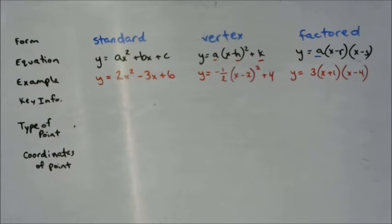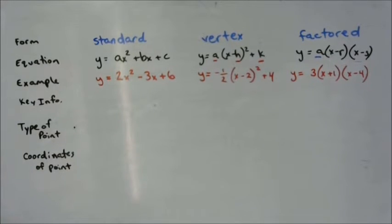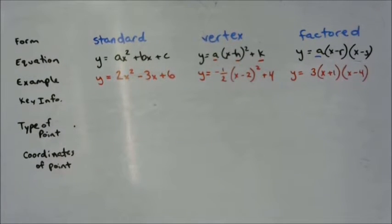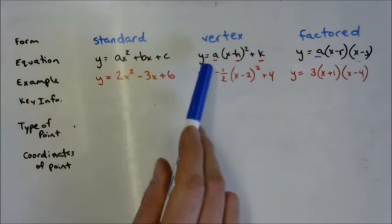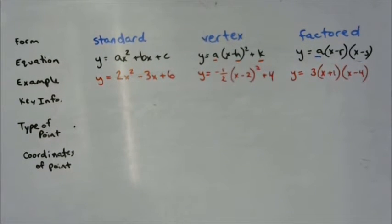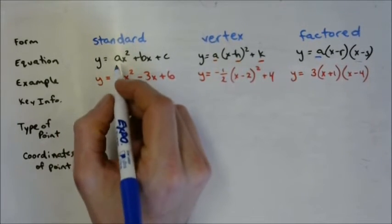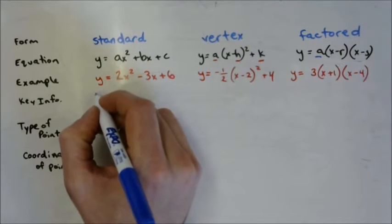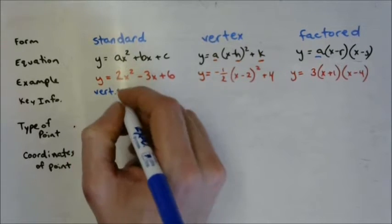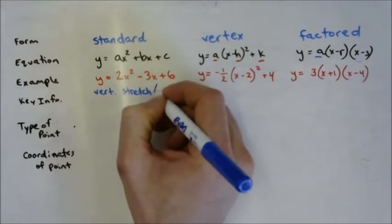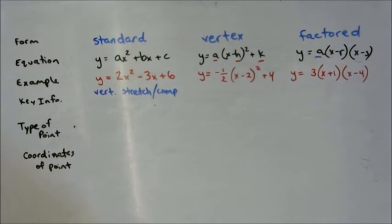What are we learning from each type of equation? You can pick up information from any one of them — can you remember anything specific? They all have an a in them, and a does the same thing in every equation. So a gives the vertical stretch or compression — write small because you're going to write a couple things in each of these boxes. Vertical stretch/compress applies across all three forms.